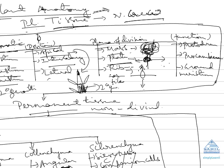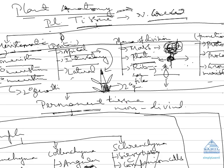Lastly, we classify meristem on the basis of function: protoderm, which gives the external tissues; procambium, which gives the vascular region including xylem and phloem; and ground meristem, which gives the cortical region. These are the types of meristem classified on different bases.